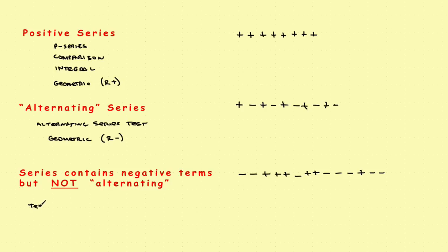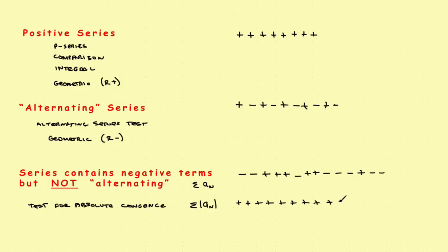What the theorem says to do is test for absolute convergence. You take the summation of the absolute value of a sub n — that converts all terms to positive. Once you've changed it to an all-positive series, you're now eligible to use any of the positive series tests. Use whichever test you need to show that this absolute value series converges.